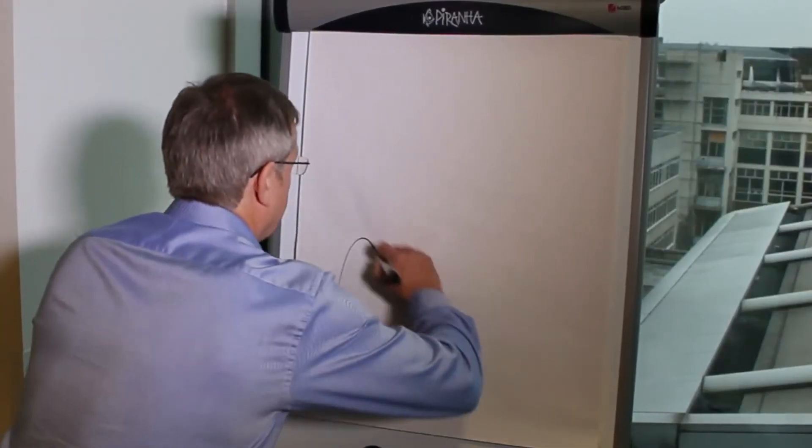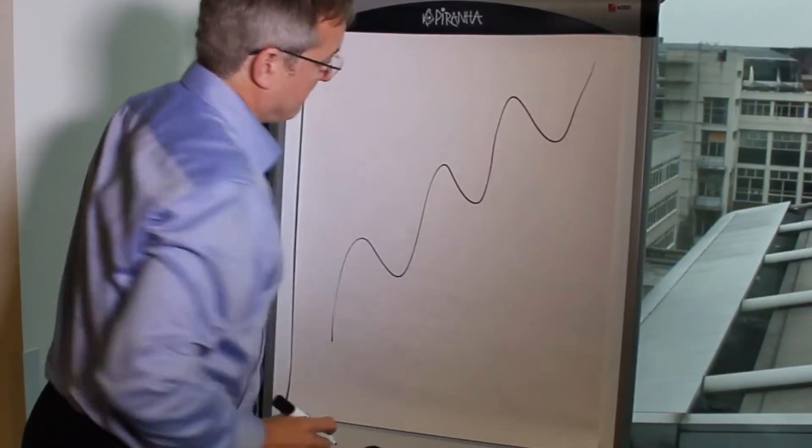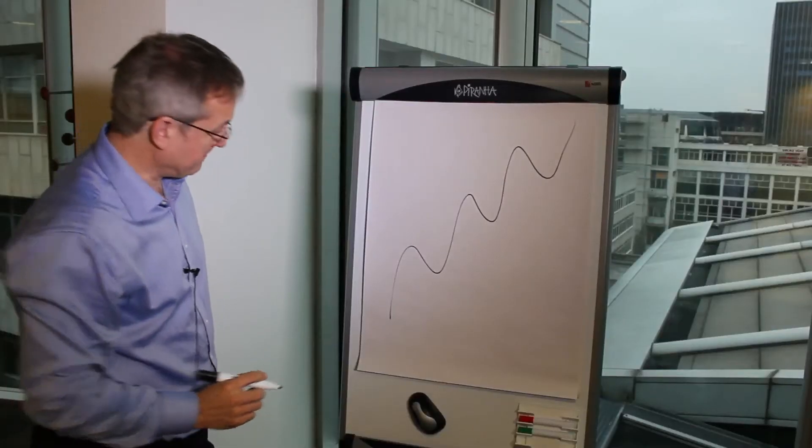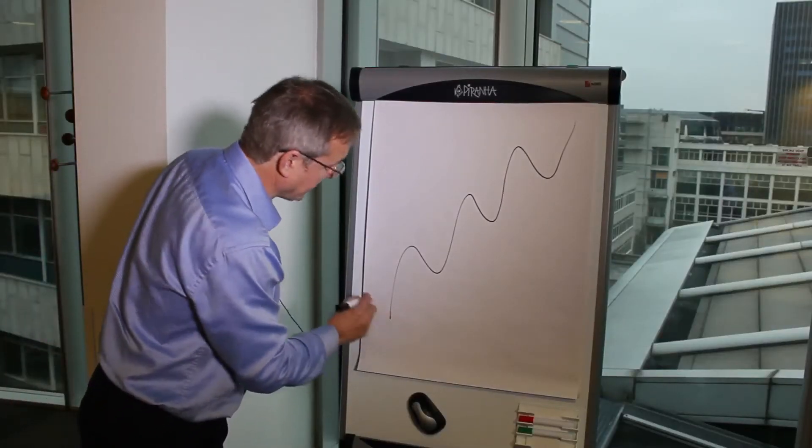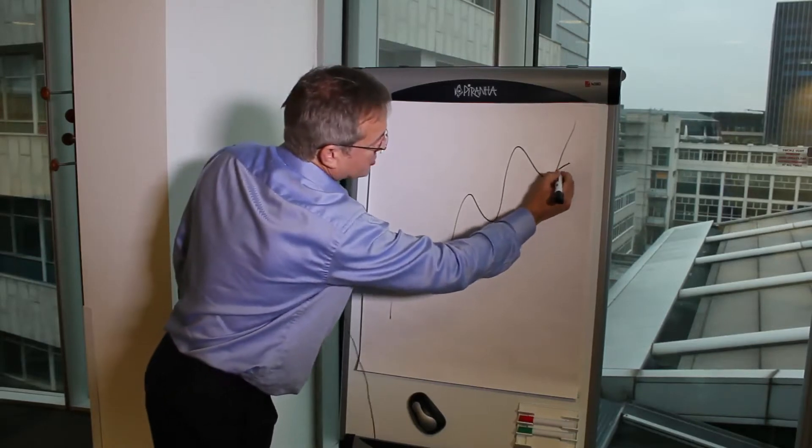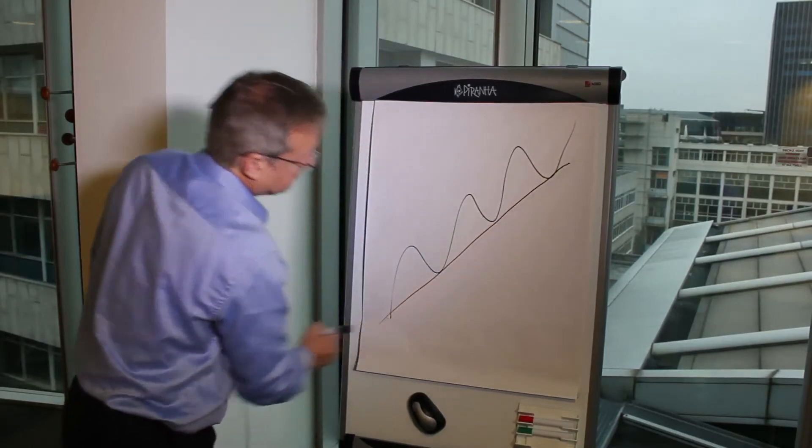Bull trends are familiar to everybody. They are a succession of rising highs and rising lows. The technician takes particular interest in defining the trend more tightly by drawing a line between the lows.